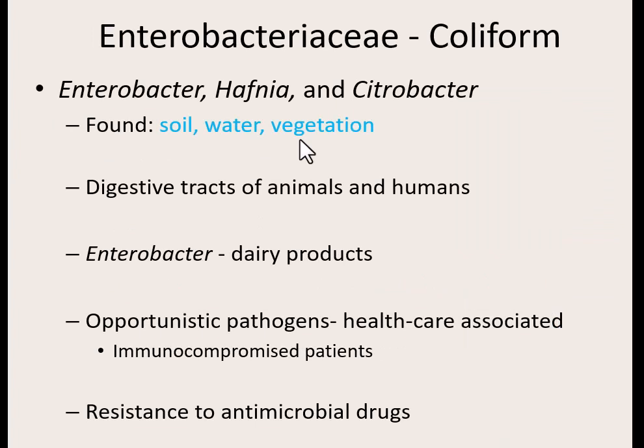We also have Enterobacter, which we group together with Hafnia and Citrobacter — they're all still coliforms. We'll work with some Citrobacter in lab in a couple of weeks. These bacteria are normally found in soil, water, and vegetation, so they're normally found in the environment. They're not always part of normal flora, but they can be found in the digestive tract of both animals and humans because they were picked up from an environmental source — someone ate contaminated soil, water, or vegetation.